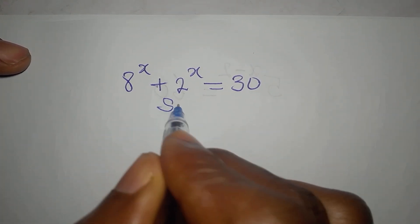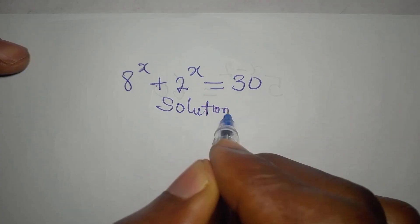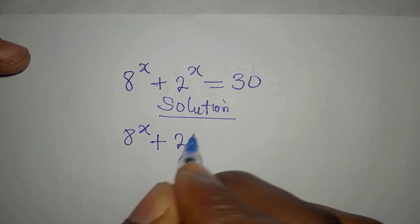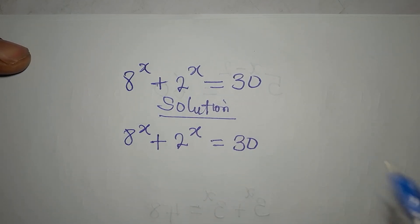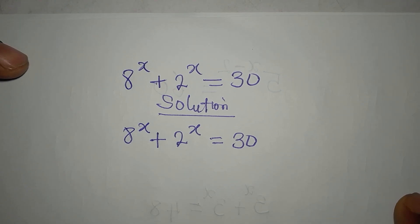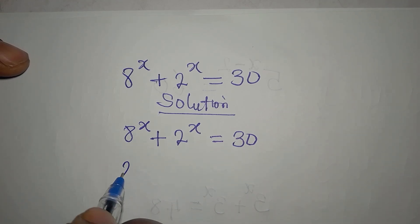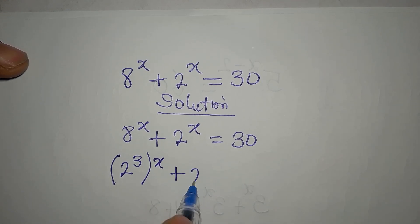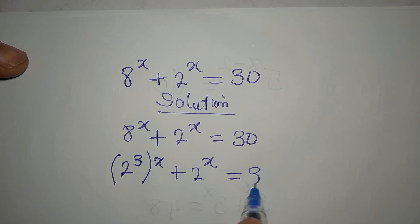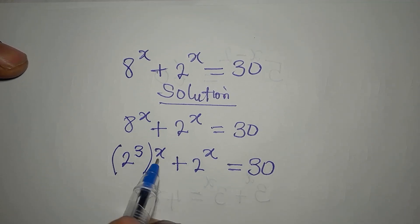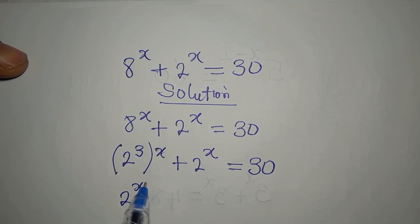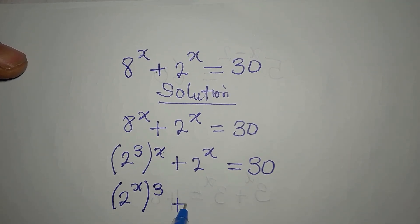Let's solve 8 to the power of x plus 2 to the power of x equals 30. What we'll do is break this 8, so that we'll have 2 to the power of 3, then x outside: 2 to the power of 3x plus 2 to the power of x equals 30. We can change the position of 3 and x to have 2 to the power of x, cubed, plus 2 to the power of x equal to 30.